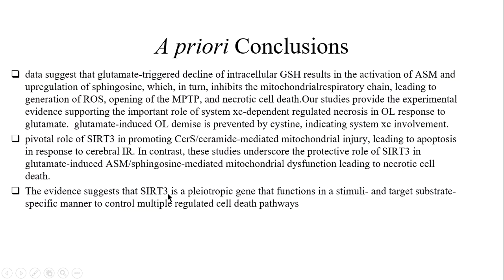Here are some a priori conclusions from the previous talks. The data suggests that the amino acid glutamate triggers a decline of intracellular glutathione, resulting in activation of an enzyme called acid sphingomyelinase (ASM). You get an upregulation of sphingosine, which in turn inhibits the mitochondrial respiratory chain, leading to generation of reactive oxygen species due to partial reduction of molecular oxygen, opening up the MPTP — a transporter across the inner mitochondrial membrane — and ultimately necrotic cell death.